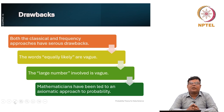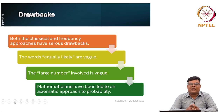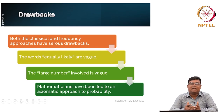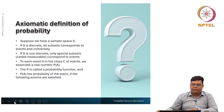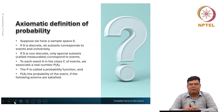Mathematicians usually define things by axiomatic approach. Axiomatic approach means we assume a minimum number of rules — called axioms. If a function satisfies those axioms, then we define that it is a probability. We do not prove the axioms; they are assumed. If a function satisfies them, it is a probability. All other properties must be proved using those axioms.